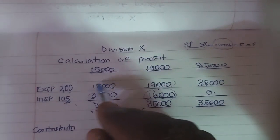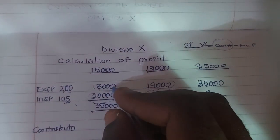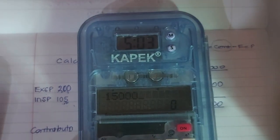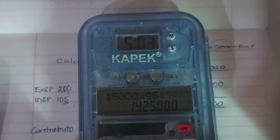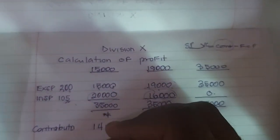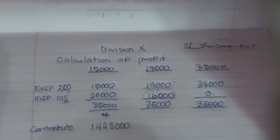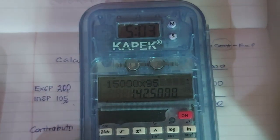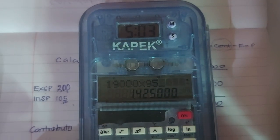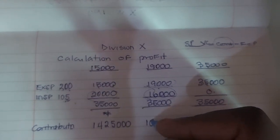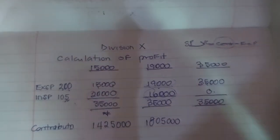When the external demand is 19,000, we only generate contribution on those 19,000 units: 19,000 times 95, which gives 1,805,000. And of course, when the external demand is 35,000, there will be contribution on all 35,000 units: 35,000 times 95, which gives 3,325,000.